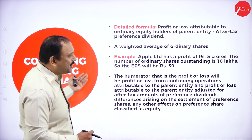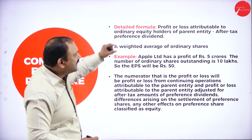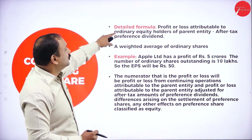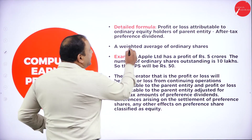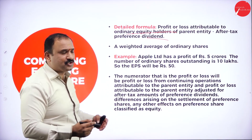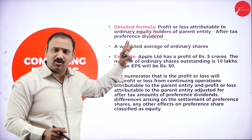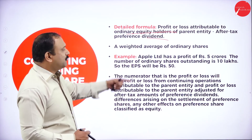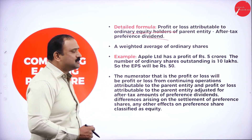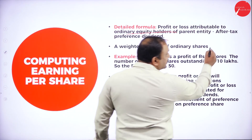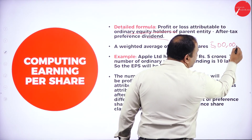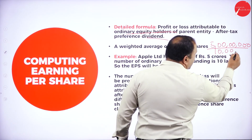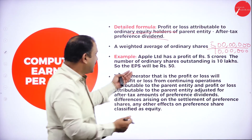When computing earnings per share, a detailed formula is used: profit or loss attributable to ordinary equity holders of the parent entity, minus after-tax preference dividends, divided by the weighted average number of ordinary shares. For example, if Apple Limited has a profit of 5 crores and the number of ordinary shares outstanding is 10 lakhs, then the EPS will be 50 rupees — a straightforward calculation of 5 crores divided by 10 lakhs.